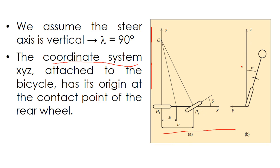Here you have z and this is y. So phi, which is our desired control variable, will be positive to the right. This coordinate system is attached to the bicycle — it will be moving with the bicycle — and the origin is at the contact point of the rear wheel.